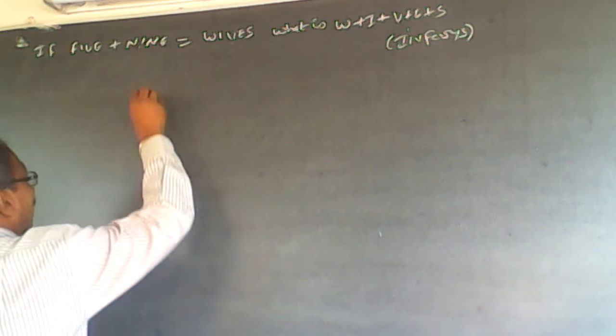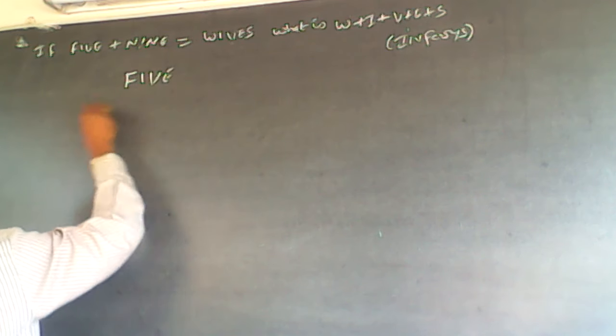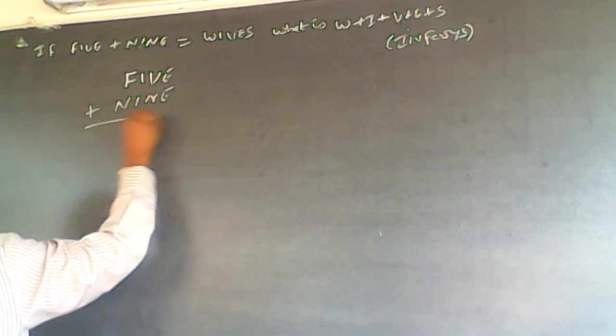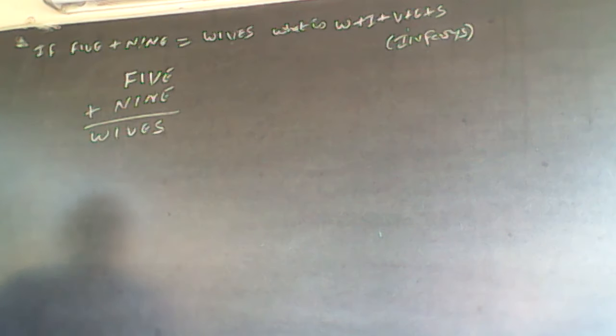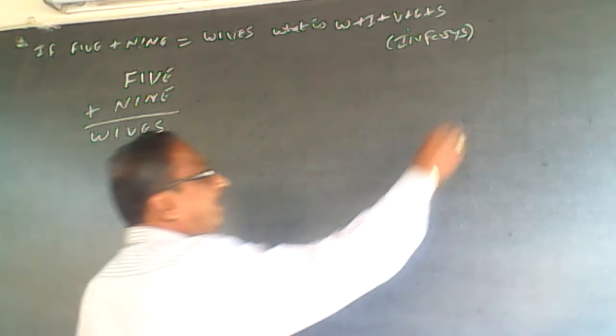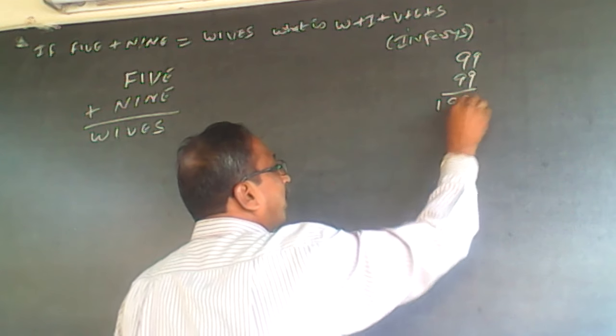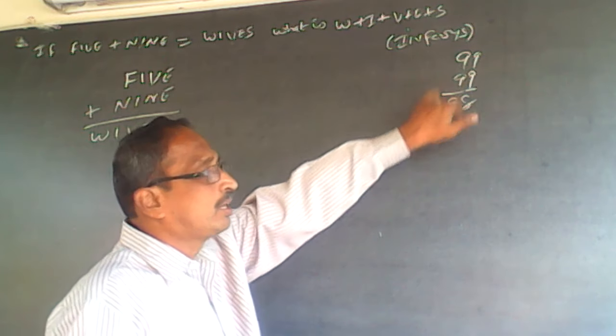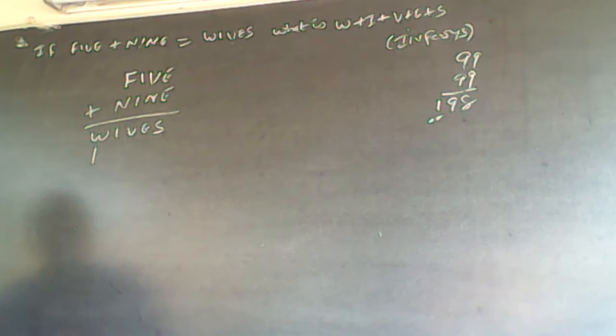What happens if I write it like this, FIVE plus NINE is equal to WIVES. This W is definitely going to be 1 because whenever I add any two numbers, the largest two digit numbers, 99 plus 99, the maximum carry can only be 1. So wherever I have got W, it's going to be only 1.